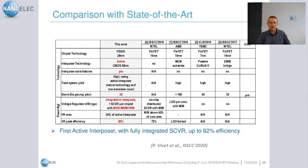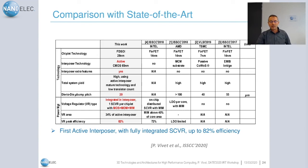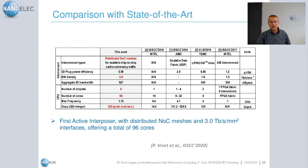Comparing to state of the art — versus previous work from Intel, AMD, and TSMC — we are the first to introduce an active interposer integrating extra features with logic. High yield is expected on this kind of object. Aggressive 20μm micro bump pitch has been achieved. The voltage regulators achieve very high energy efficiency of 82%, thanks to integrating all the capacitance within the active interposer. Interconnect bandwidth density of 3 TB/s/mm² has been achieved — two times better than state of the art. We are the first to report so many chiplets integrated into a single substrate with approximately 100 cores.